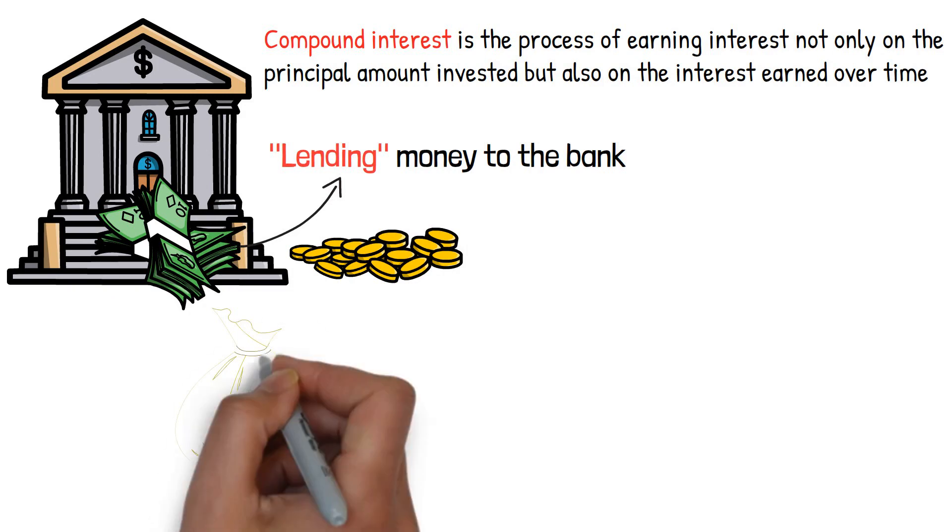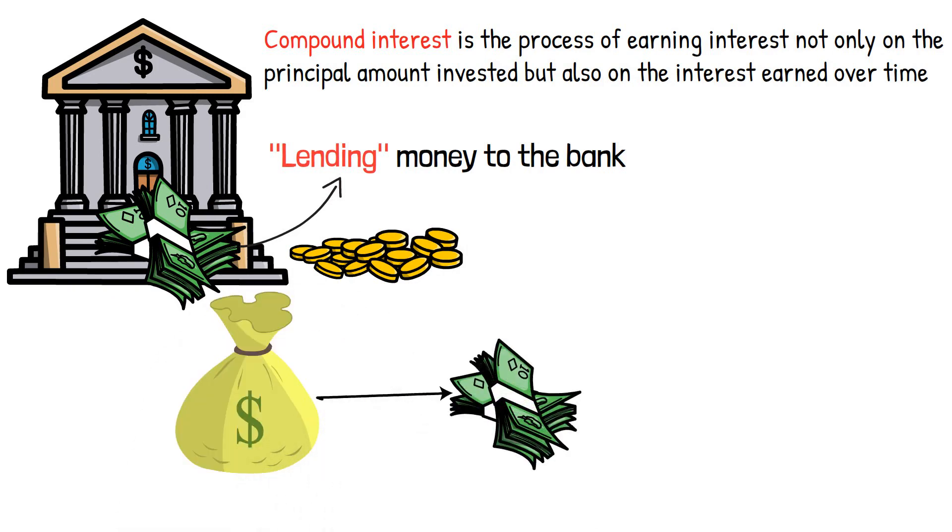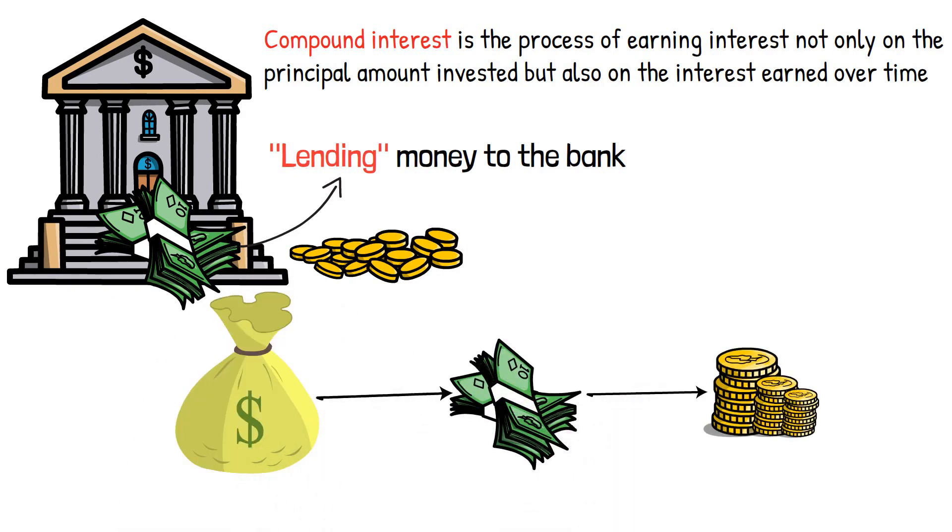Simply put, your investment generates earnings, which generate another earnings, and so on. Over time, this compounding effect can turn a small investment into a substantial sum.